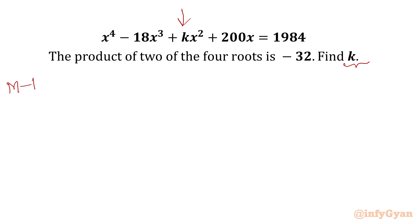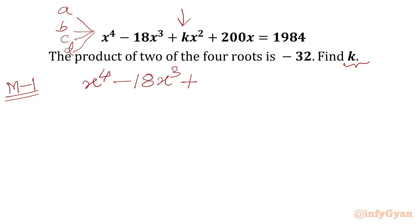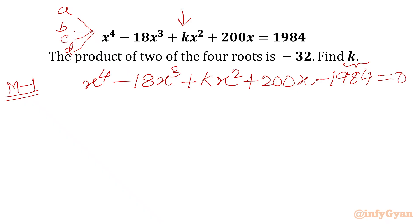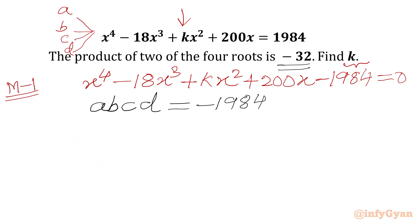I will be solving this question in two ways. Method number 1: let's say roots are a, b, c and d. We will write all terms to one side: x^4 minus 18x^3 plus kx^2 plus 200x minus 1984 equals 0. Using Vieta's method, the product of roots a times b times c times d equals minus 1984. As per the problem, let cd equal minus 32.